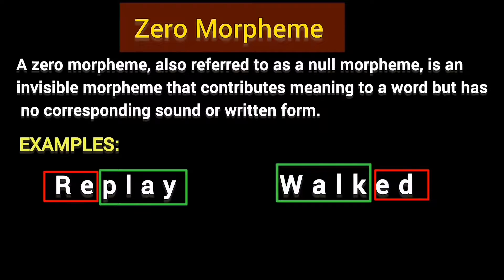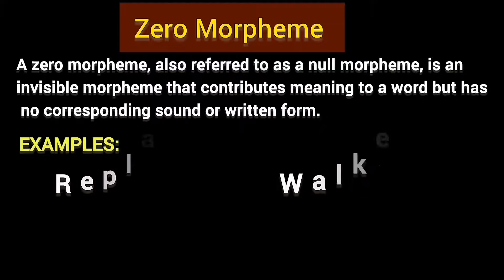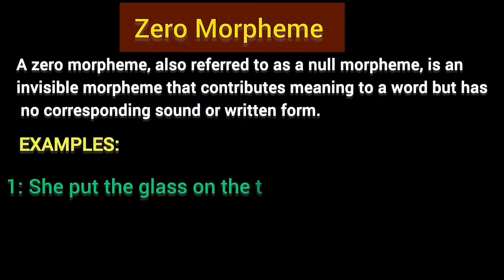But there are some words which have two morphemes but one morpheme cannot be seen or heard — that is called a zero morpheme. For example: 'She put the glass on the table.' Look at the word 'put.' This word also has two morphemes. The word itself is a free morpheme, and another morpheme is that it shows past tense. This is simple past tense, but you can see there is no separate form or sound for this morpheme. So this is called a zero morpheme — there is no physical form or sound in this word.